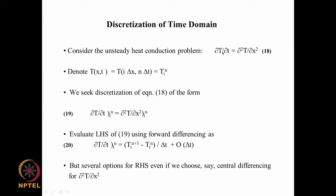We have T as a function of both x and t. We discretize using the index i in the space domain, so that x_i = i·Δx, and in the time domain t_n = n·Δt. So T(x_i, t_n) is written as T_i^n, with the space index i as a subscript and the time index n as a superscript. This is the usual convention, indicating the value of T at spatial grid location i and time step n.